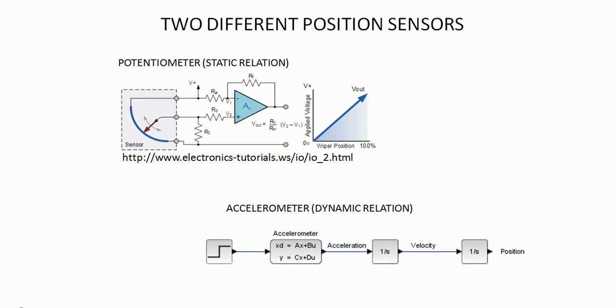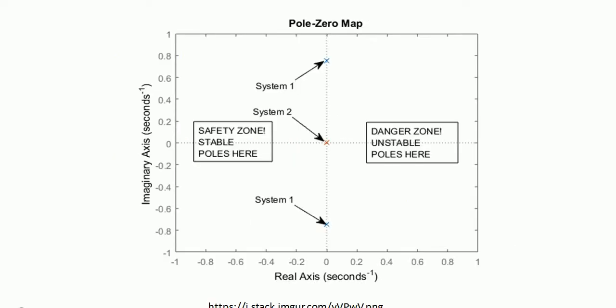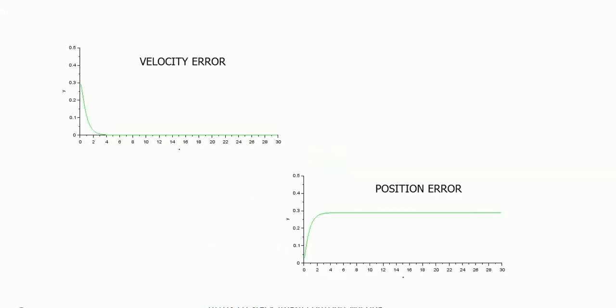Unlike other sensors in which a static relation exists between the measurement and the physical variable we are interested, an accelerometer has a dynamical relation through two integrators. Integrators, we must remember, are poles at the origin that edge the instability zone of the s-plane.